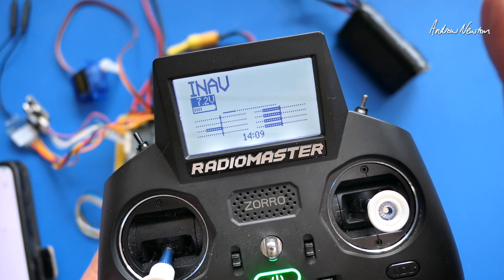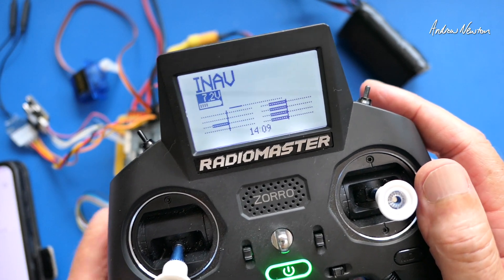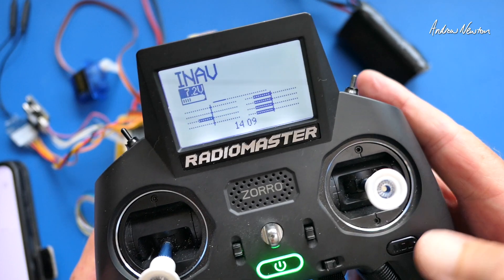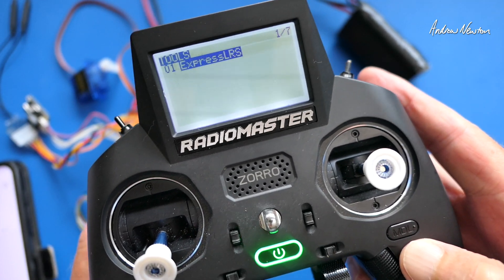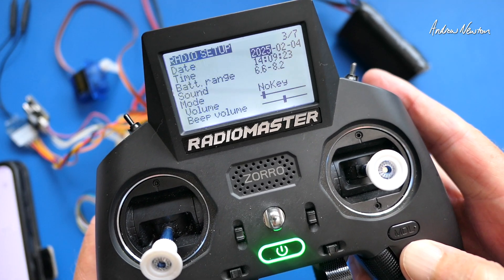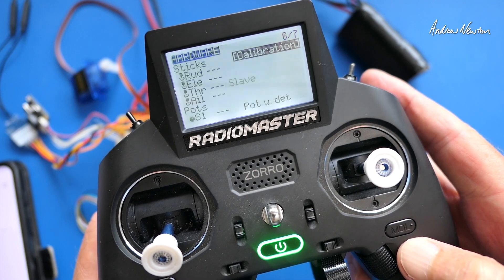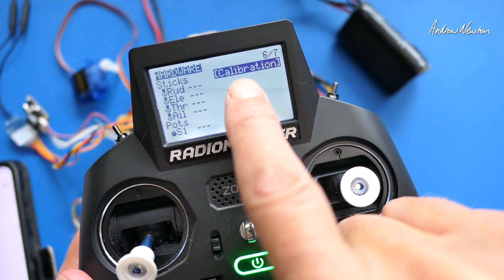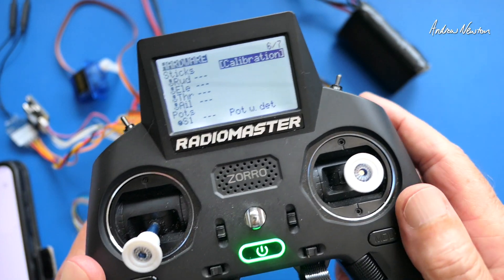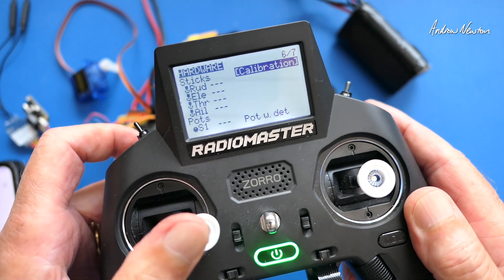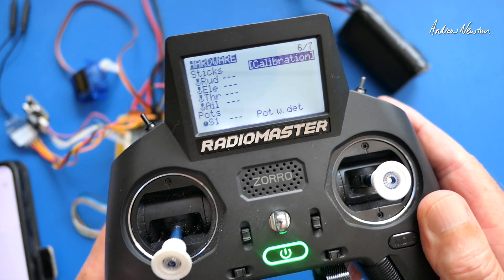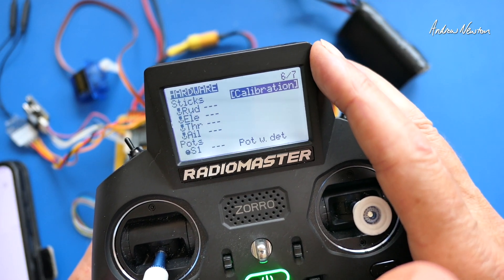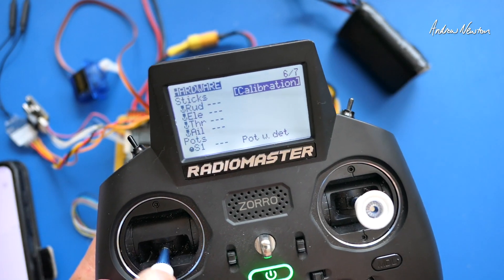Now one final thing that has caused problems for some people is the calibration of your radio sticks. If you have recently updated your firmware, you may need to redo your stick calibration. So go to the hardware page in OpenTX or EdgeTX and click the calibration, and then follow all the prompts to set the limits for all your sticks and knobs and things like that. That can possibly prevent arming if the throttle doesn't go down far enough.